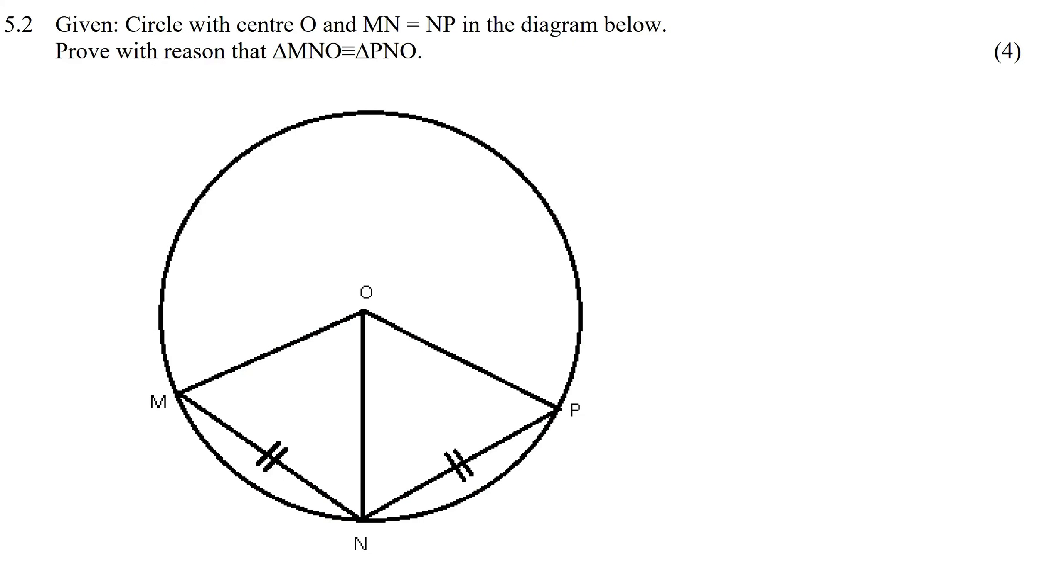Given circle with a center at O, MN is equal to NP. They say prove with reasons that this triangle MNO is... now what is that? That is congruency, and they want us to prove that it's congruent to PNO, so this triangle over here.